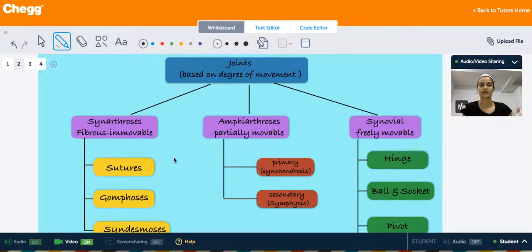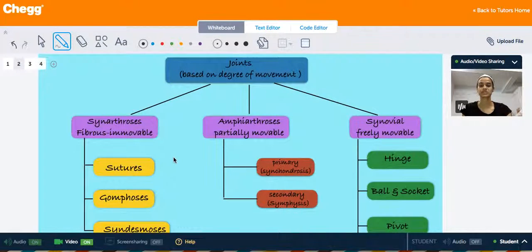These joints are mainly made for giving strength and protection and not so much for movement. Synarthrosis are of three different types: sutures, gomphoses, and syndesmosis.